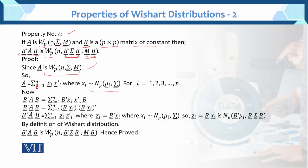Now B'AB — what have we done with this transformation? We have transformed it and we see these transformations. Then we see that the transformation before the Wishart equals the transformation after, meaning the other factor is also equal. This converts into the univariate factor. Basically, we have transformed the matrix of constants.